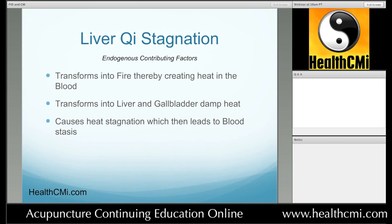Normally we speak of PID in terms of being caused by an external pathogen. However, inflammation of the pelvic region organs can also be caused by liver qi stagnation turning into fire. Qi stagnation in the liver can also accumulate in the liver and gallbladder as damp heat — so liver qi stagnation turning into liver and gallbladder damp heat — which creates the conditions for PID.